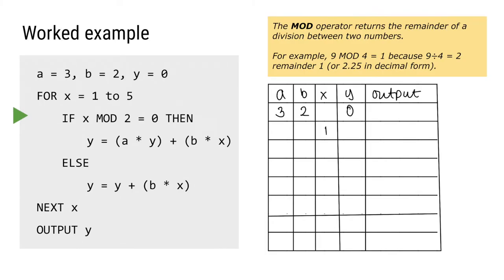Inside the for loop there's an if statement: 'if x mod 2 equals 0'. The mod operator returns the remainder of a division between two numbers — for example 9 mod 4 equals 1, because 9 divided by 4 leaves a remainder of 1. So if x divided by 2 has no remainder, we run the first branch: y equals a times y plus b times x. Otherwise (the else branch), we run: y equals itself plus b times x.